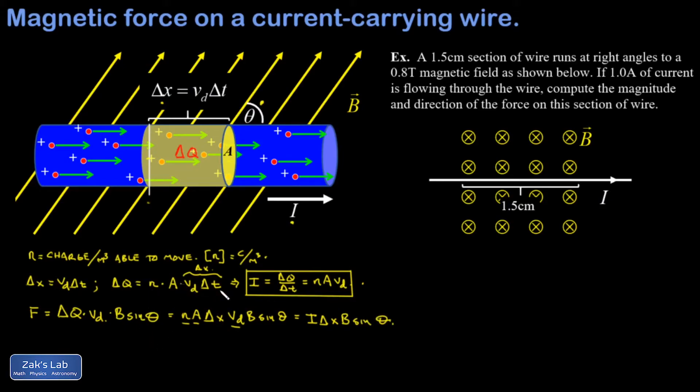And finally, we arrive at our force per unit length on the current carrying conductor. I divide both sides by delta X, and I get the force per length here is I B sine theta.